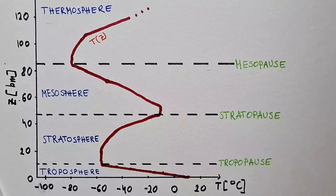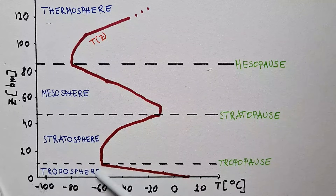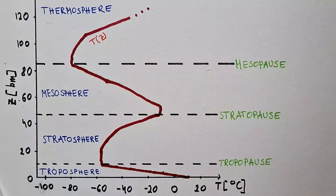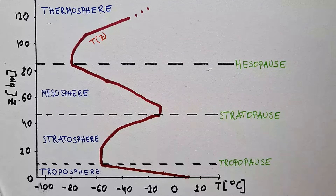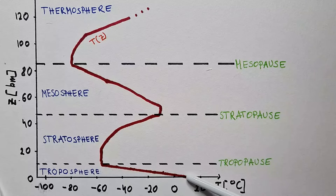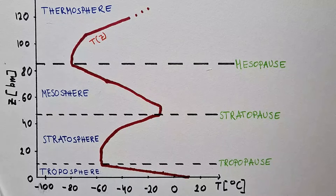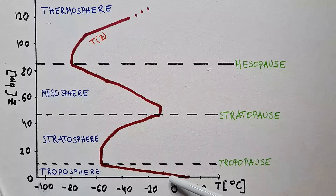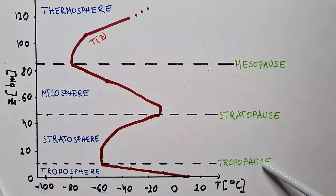The average temperature around the globe at sea level is 15 degrees Celsius. The troposphere is about 11 kilometers high and the temperature at those altitudes is around minus 56 degrees Celsius. Temperature decreases with height in the troposphere because the atmosphere is predominantly heated by the surface, so the further we are from the surface, the colder it gets. The top of the troposphere is called the tropopause.